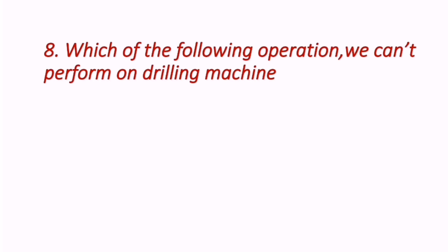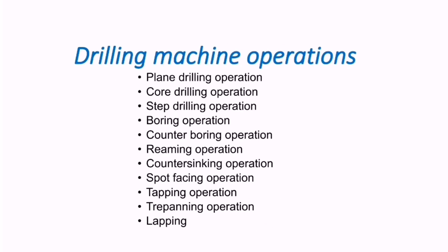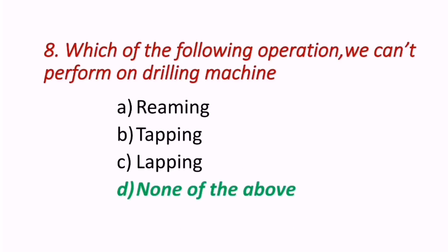Eighth question: Which of the following operations cannot be performed on a drilling machine? Drilling machine operations include trepanning, tapping, lapping, reaming, counter boring, boring, step drilling, and more. The correct answer is none of the above — reaming, tapping, and lapping all belong to drilling machine operations.